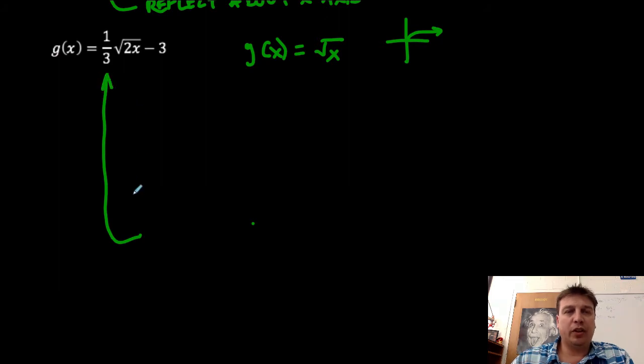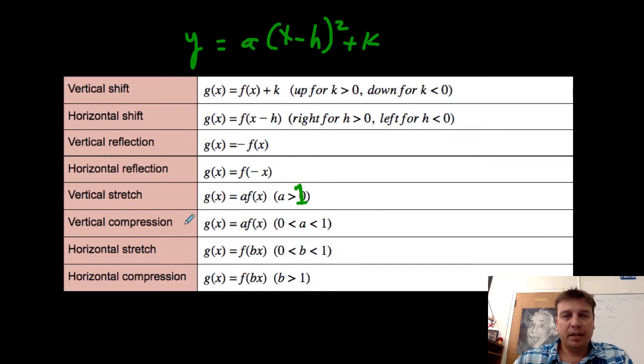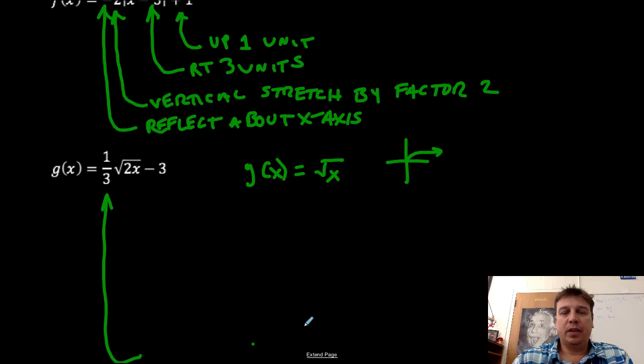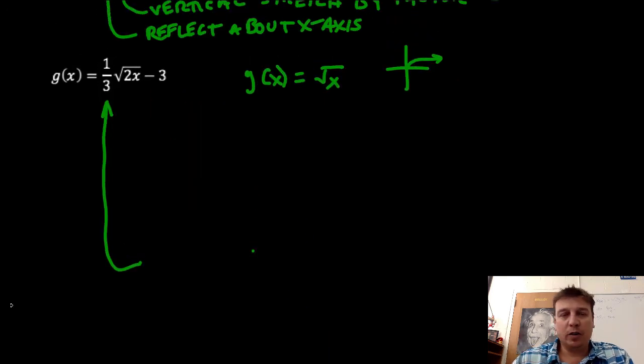So, this 1 third. So, we'll go back. Again, if I'm in the front. So, here's my a. My a value is in the front. And my value is between 0 and 1. So, this is what's known as a vertical compression. So, we'll come back here. This is a vertical compression. And this is by a factor of 3.